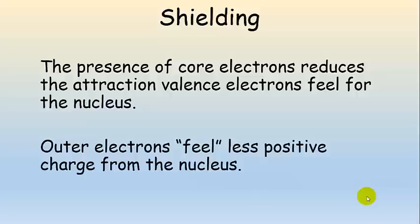Shielding is the presence of core electrons — electrons that are between a valence electron and the nucleus — and they reduce the attraction that those valence electrons feel for the nucleus. For instance, an electron in the n=3, or 3s subshell for sodium, feels much less nuclear charge than an inner electron in n=2 or n=1. Outer electrons feel a lot less positive charge from the nucleus.